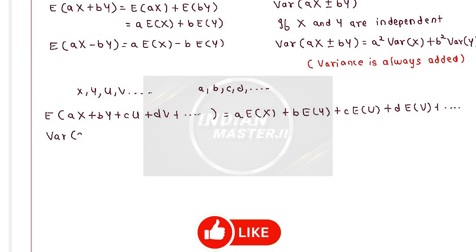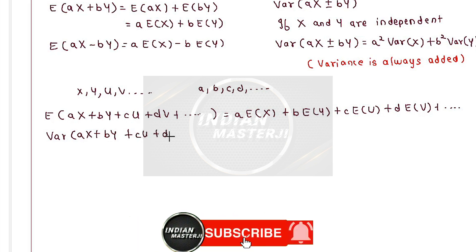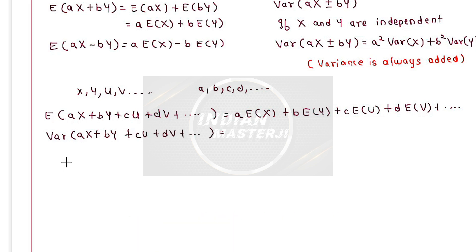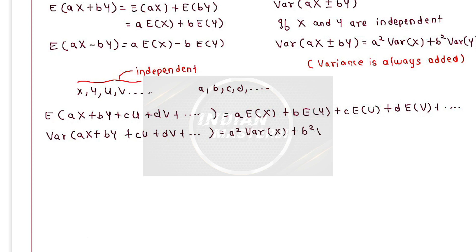Similarly, to find the variance of ax plus by plus cu plus dv and so on, it is necessary that x, y, u, v are all independent random variables. Then the variance is directly a² variance of x plus b² variance of y plus c² variance of u plus d² variance of v and so on — you can add up all the variances.